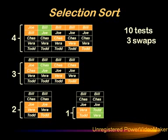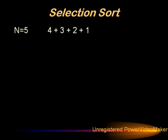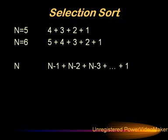If we think about where that came from: it was four tests to get the first element correct, three for the second element, two for the third element, and one to straighten out the last two. So for five items — n equals five — we needed four plus three plus two plus one tests. For six items, it's going to take five plus four plus three plus two plus one. In general, for n items, it's going to take (n−1) + (n−2) + (n−3) down until we get to the last two, which is one.